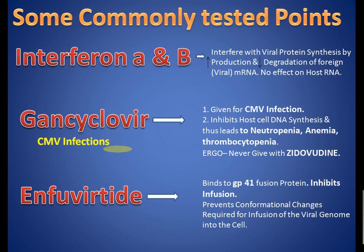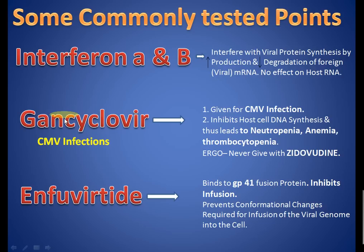Interferon alpha and beta are not drugs but naturally occurring interferons. They decrease the production and increase the degradation of foreign viral mRNA, while having no effect on host mRNA. Gancyclovir also causes bone marrow suppression — it inhibits host cell DNA synthesis and leads to neutropenia, anemia, and thrombocytopenia.